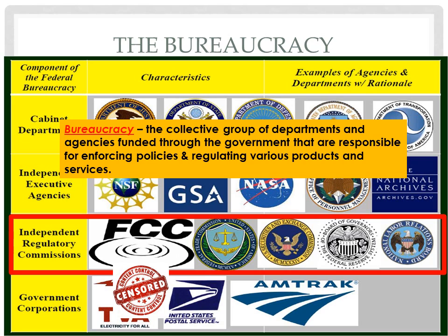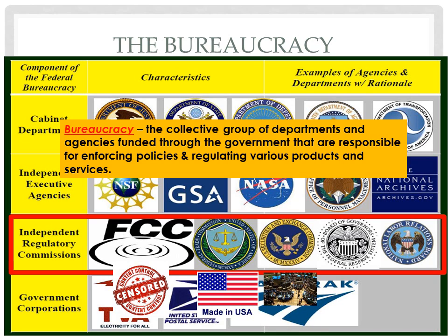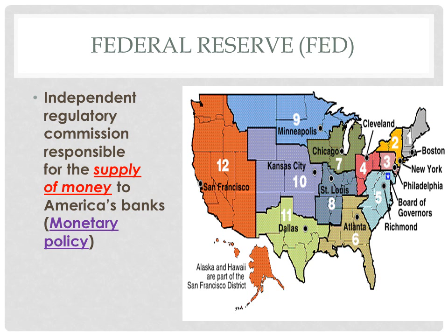Other independent regulatory commissions include the Federal Trade Commission, which makes sure that advertising in products is actually truthful; the Securities and Exchange Commission, which oversees Wall Street and makes sure trading is legal; and the Federal Reserve Board. The Federal Reserve, created in 1913 by President Woodrow Wilson and considered his crowning presidential achievement, was designed to take the monetary side — the supply of money — out of the hands of the government, as it would create a conflict of interest to have the people spending the money in control of its supply. The Federal Reserve sets up central banking systems throughout the country and is responsible for supplying banks with their money — this is what we call U.S. monetary policy.